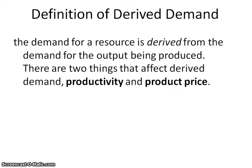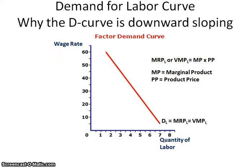This is where the second part of the definition is going to be discussed. There are two things that affect derived demand: productivity and product price. We're going to take a look at how these two things make the demand curve look the way that it does.